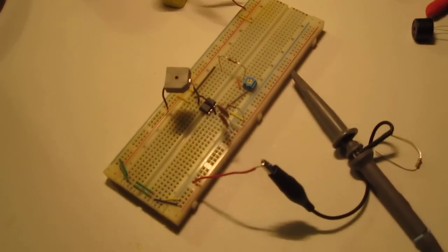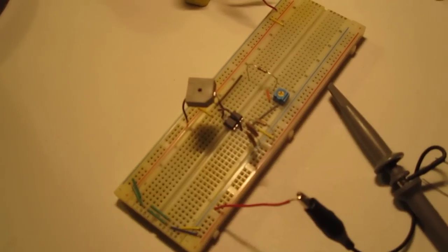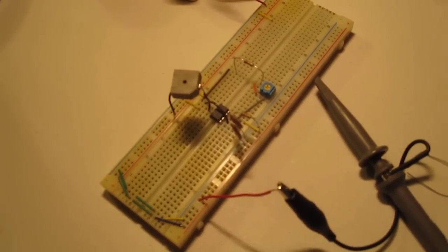Okay, here's the Morse code oscillator I built on the breadboard. The plan is to make a Morse code oscillator in an Altoids tin, which is right here.